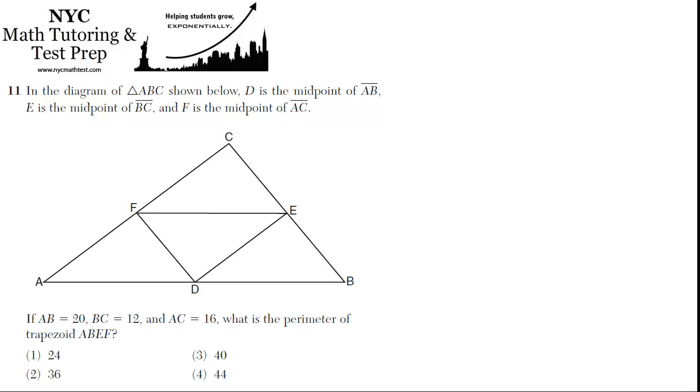11. In the diagram of triangle ABC shown below, D is the midpoint of AB, E is the midpoint of BC, and F is the midpoint of AC.